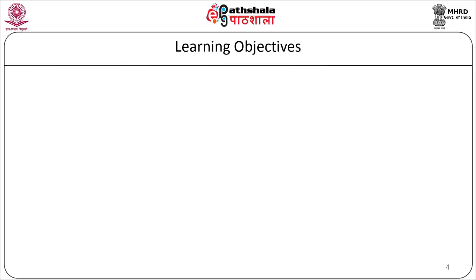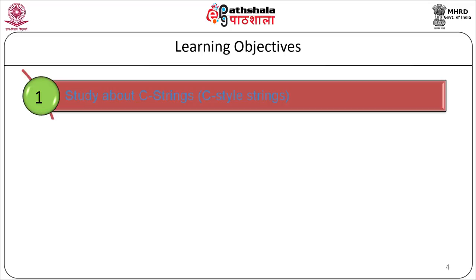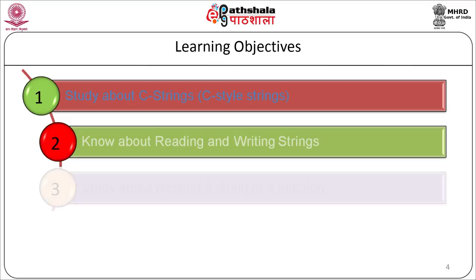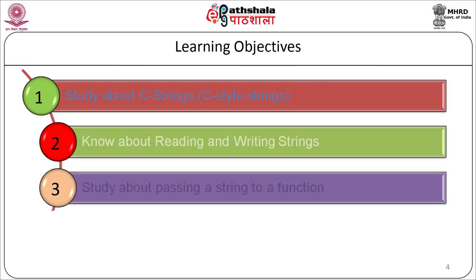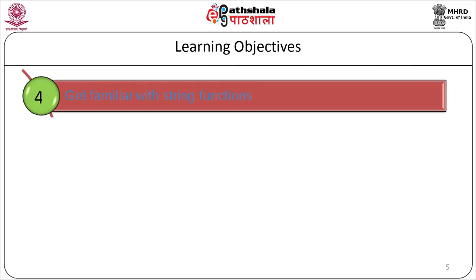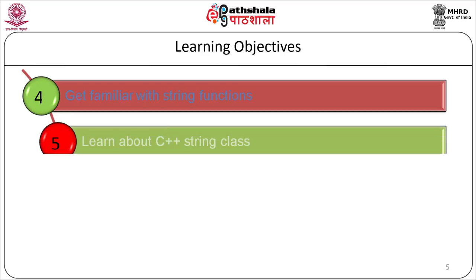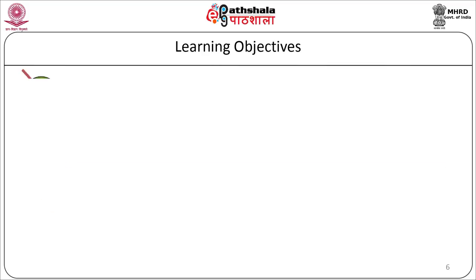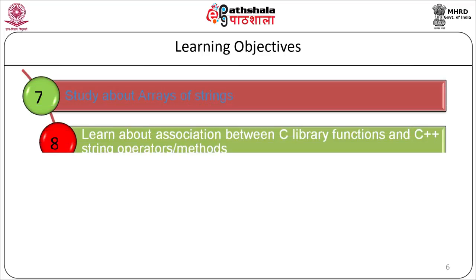The two types of strings supported by C++ are C strings (C-style strings) and strings that are objects of the string class. The learning objectives of this module are: C strings, reading and writing strings, passing a string to a function, string functions, the C++ string class, operations on string class objects, arrays of strings, and the association between C library functions and C++ string operators or methods.